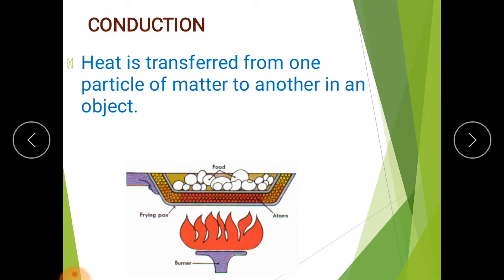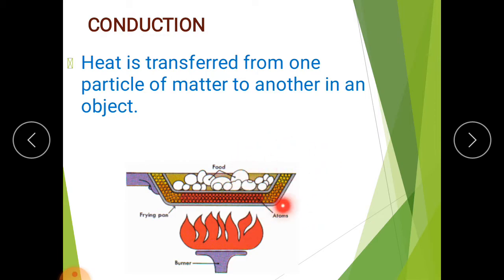Conduction always takes place through a solid material. When this pan is made up of metal and is heated through the burner, the heat will be transferred to the food. This is the transfer of heat — movement of heat through a solid metal, through this pan — and this is known as conduction.